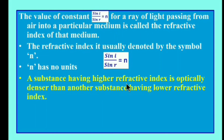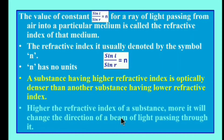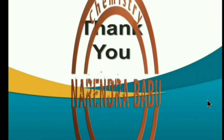A substance having a higher refractive index is optically denser than another substance having a lower refractive index. Of two substances, the one with the higher refractive index is the denser medium, and the one with the lower refractive index is the rarer medium. Higher the refractive index of a substance, more it will change the direction of a beam of light passing through it — meaning more refraction or bending takes place. Thank you for watching this video.